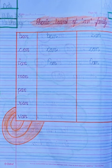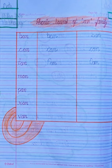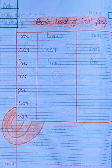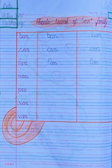This is your revision work for exam and topic is phonic sound of 'an' family. And now you can see which family you learned from 'an' family. Today what is our 'an' family?